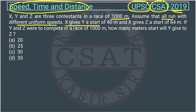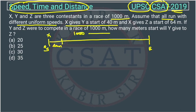X gives Y a start of 40 meters. Let's draw it from here to here. This is the starting point and this is the final point. X gives Y a start of 40 meters, and from start to final, the total distance is 1000.